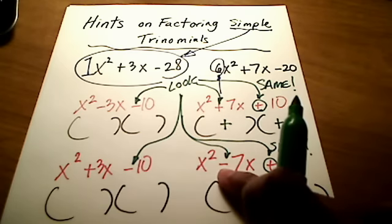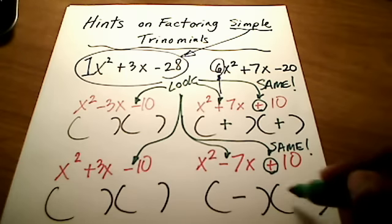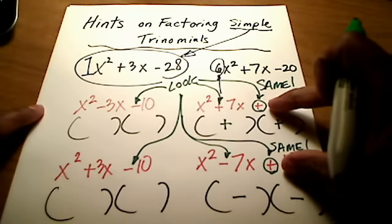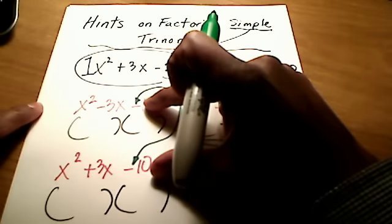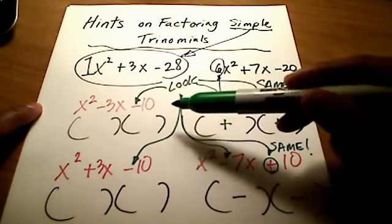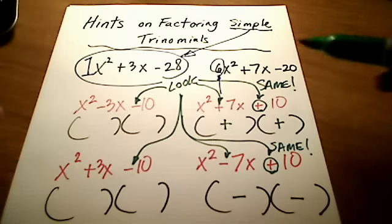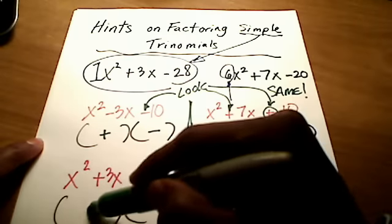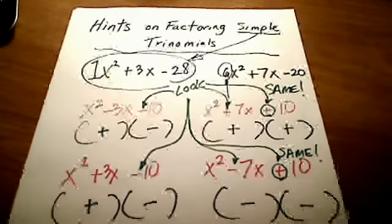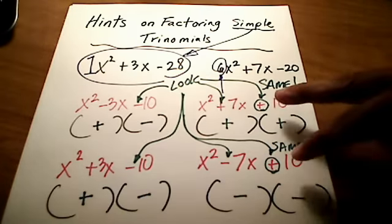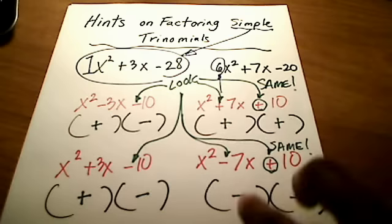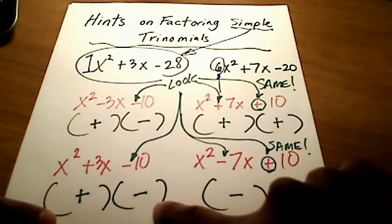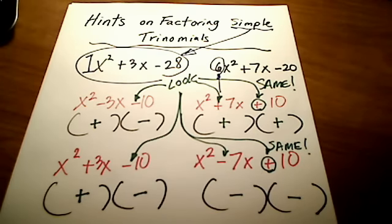But if I see a minus sign in the middle term, that means they're both going to be minus. Now looking at the other cases — when that last term has a minus sign — automatically one of the parentheses is going to be plus and the other is going to be minus. They're automatically going to have different signs. So: plus sign at the end means same signs; minus sign at the end means different signs, one plus and one minus.